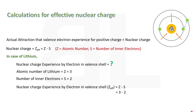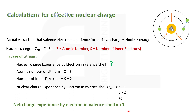The nuclear charge experienced by the electron in the valence shell equals Z minus S. For lithium, the atomic number Z is 3, and the number of inner (core) electrons S is 2. So: Z_eff = 3 − 2 = +1. This means the net charge experienced by the electron in the valence shell of lithium is equal to +1, which will be very helpful when learning this topic.